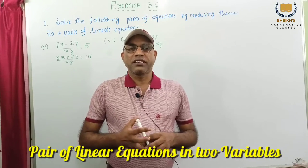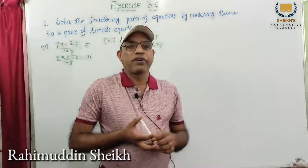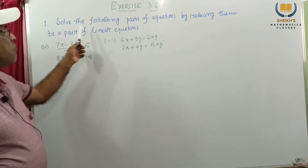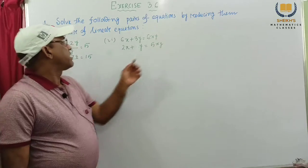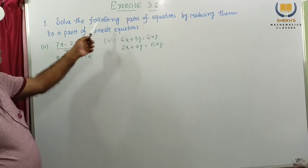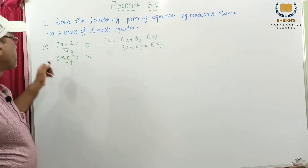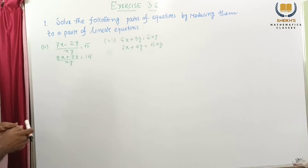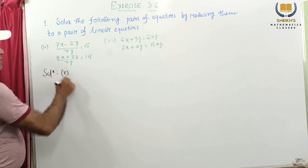Dear students, today we consider exercise 3.6, problem number 5. Solve the following pair of equations by reducing them to a pair of linear equations. This equation is given, we have to solve this by reducing it to a linear equation. Now, solution 5, number we consider.